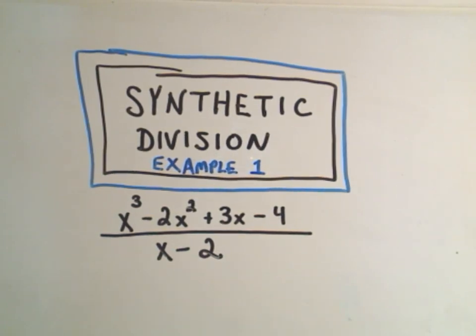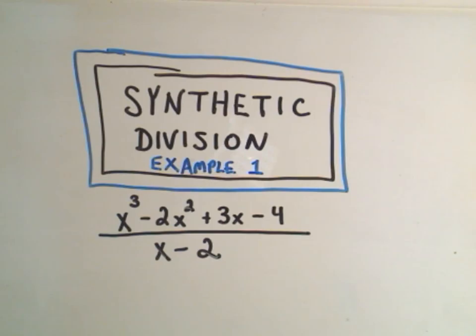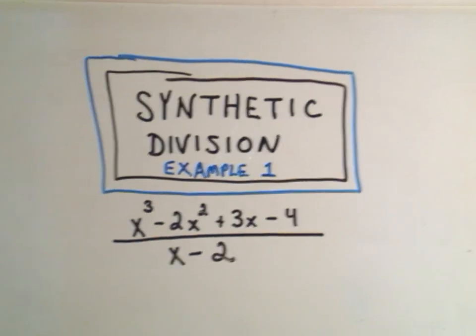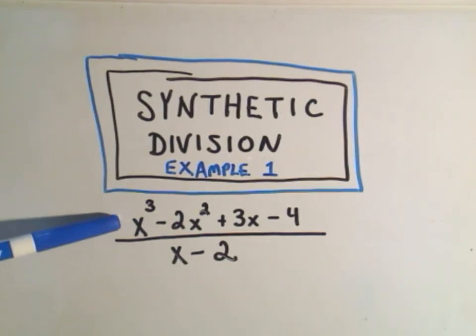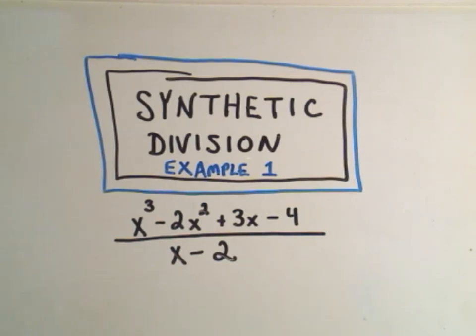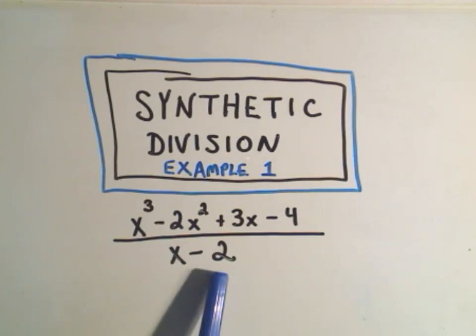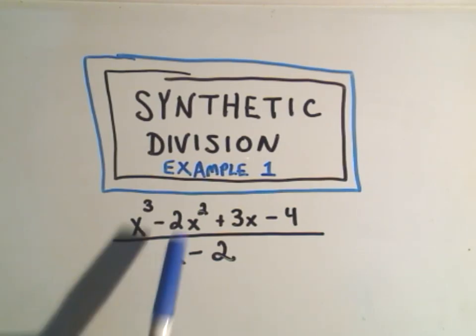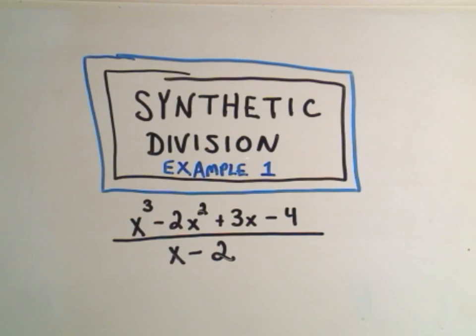In this video I want to do an example of what's called synthetic division. Synthetic division is when you're dividing one polynomial by a first degree polynomial, so x to the first. It may or may not have a number in there. If it's just x, you would just break things up individually and it would be pretty easy anyway.